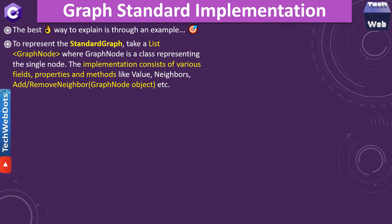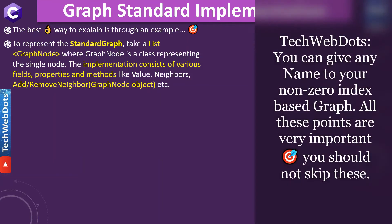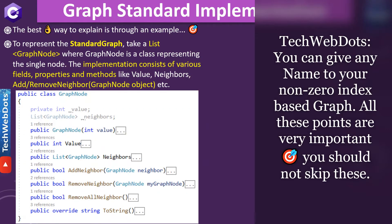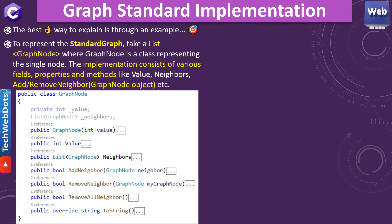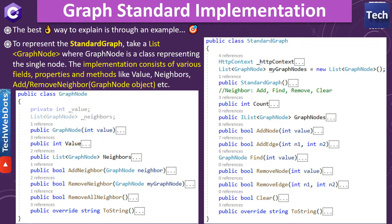Let me quickly give you a brief overview of what we are going to do. To represent a standard graph — I call it 'standard graph' because it is non-zero index based — we will take a list of graph nodes. The GraphNode class represents a single node. On a single node, we should be able to perform add neighbor, remove neighbor, remove all neighbors, assign the node value, and get the value of that graph node.